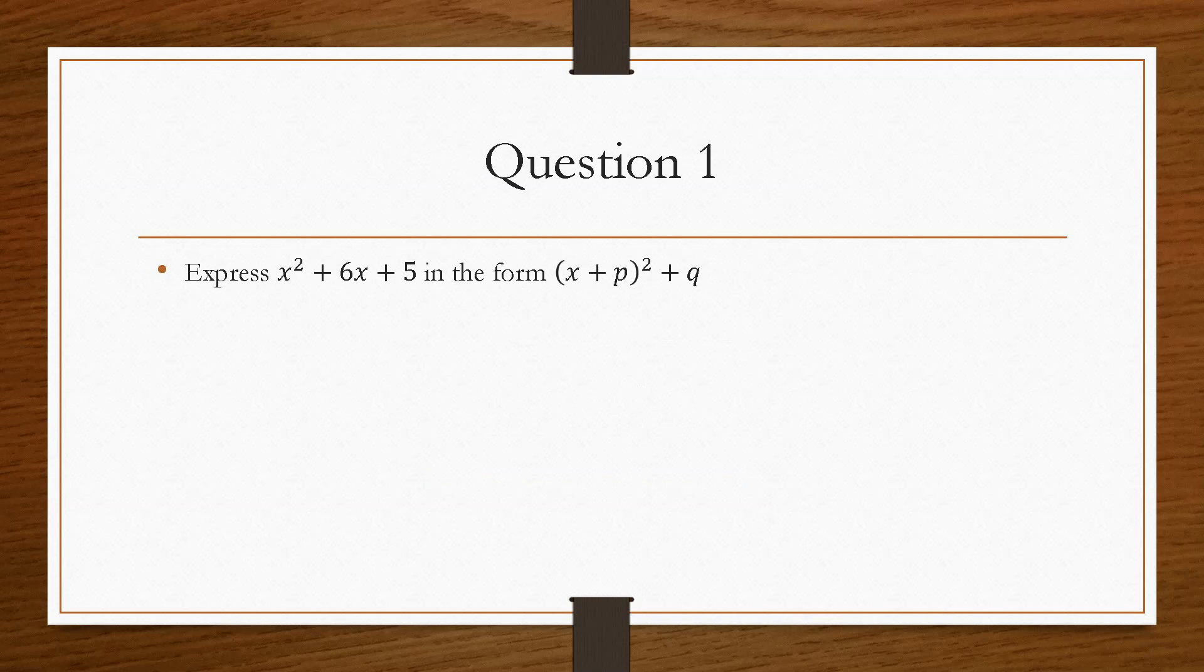So if we take a look at question number one, it says express x squared plus 6x plus 5 in the form of x plus p squared plus q. Now when you see this, you must think that it is completing the square.